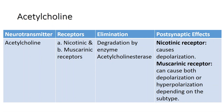Acetylcholine was the first neurotransmitter identified. It is released at the neuromuscular junction and cholinergic fibers of the autonomic nervous system. The cholinergic synapses are also widely distributed throughout the brain. Once released, acetylcholine binds to post-synaptic receptors and is degraded by the enzyme acetylcholinesterase.